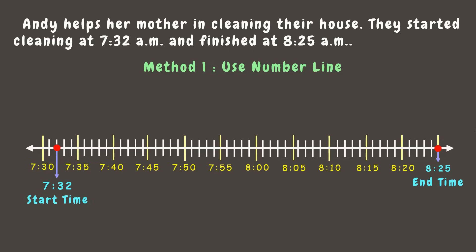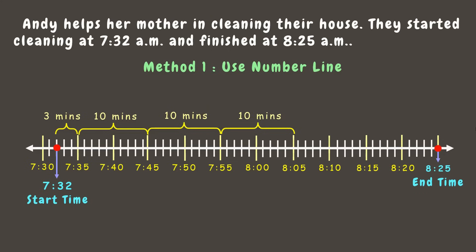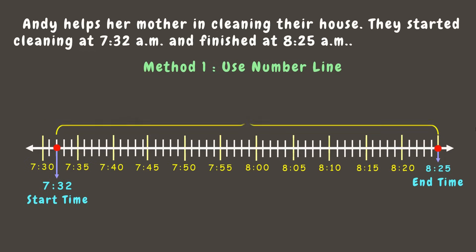Now let's count the minutes from start to end. From 7:32 to 7:35 is 3 minutes. From 7:35 to 7:45 is 10 minutes. From 7:45 to 7:55 is 10 minutes. From 7:55 to 8:15 is 10 minutes. And from 8:15 to 8:25 is 10 more minutes. Combining all these, we get exactly 53 minutes as the total elapsed time.